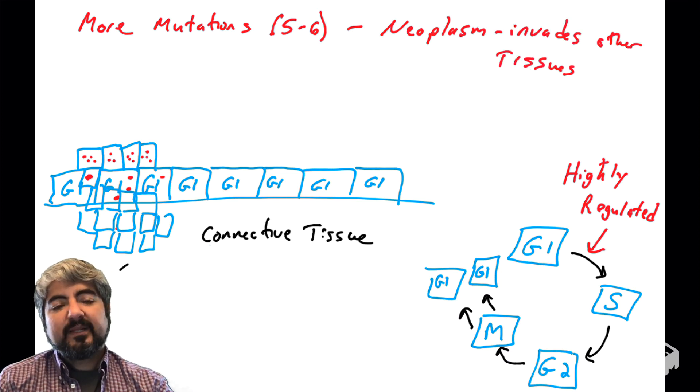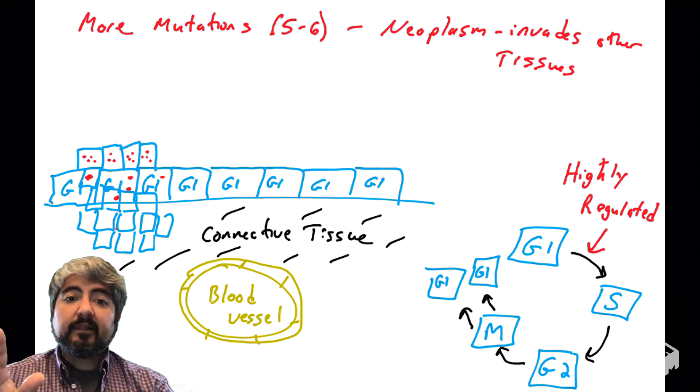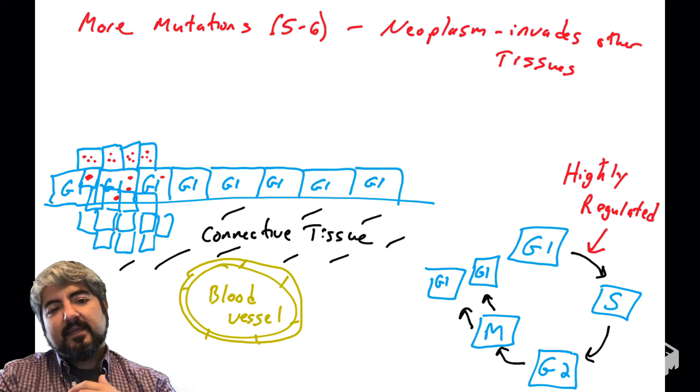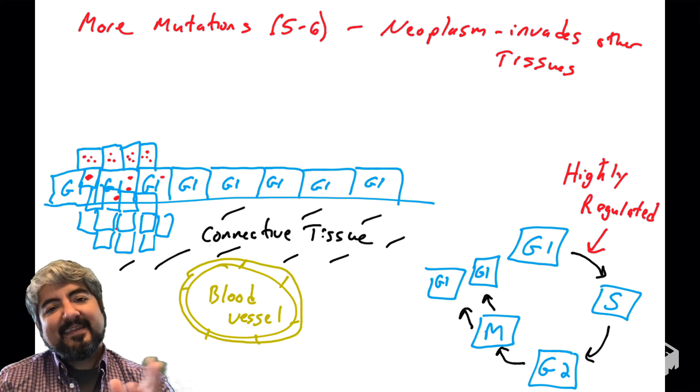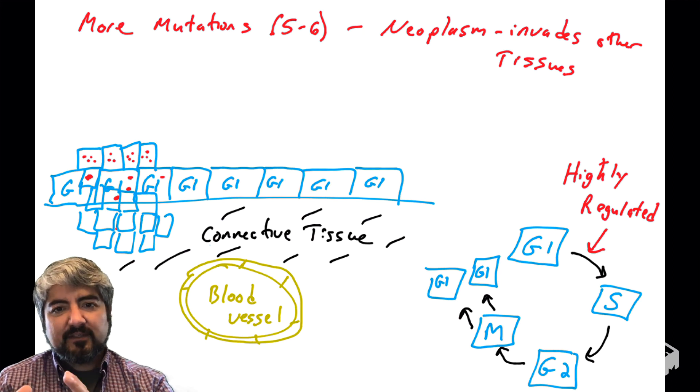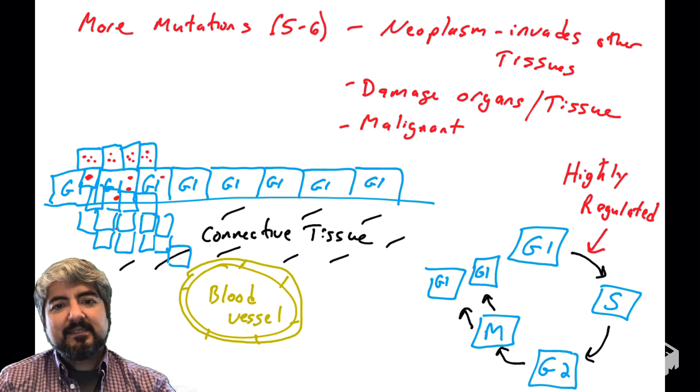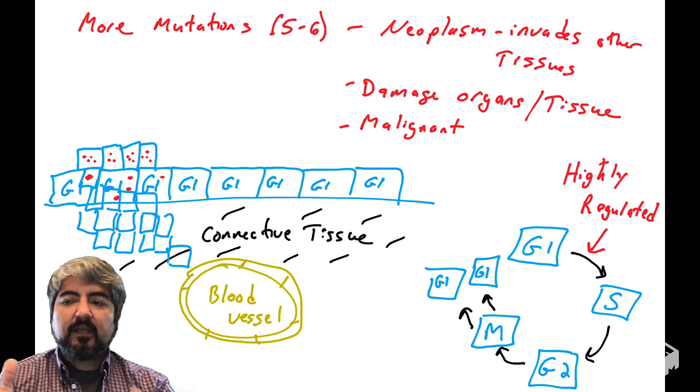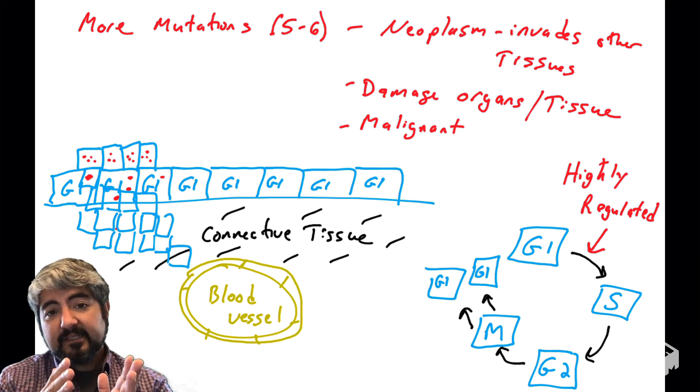And these cells are growing so uncontrollably that they start to invade other tissues. So I drew the blue cells as epithelial tissue, and now they've invaded the basement membrane, gone into the stroma, into the connective tissue below, and now they've invaded the connective tissue. And so once these cells start invading other tissues, we can call this a neoplasm, and this is really malignant growth because these cells are going into tissues they don't belong in. They're damaging the function of those organs and tissues.